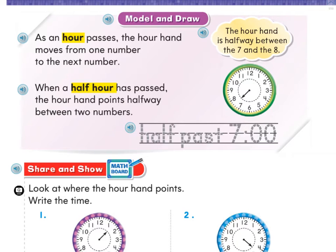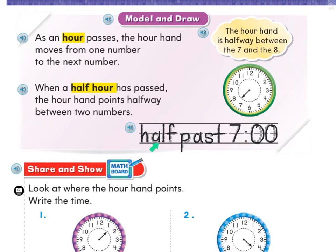So when the clock looks like that, what you're going to write is 'half past seven.' Go ahead and trace it so you get used to writing 'half past seven o'clock.'